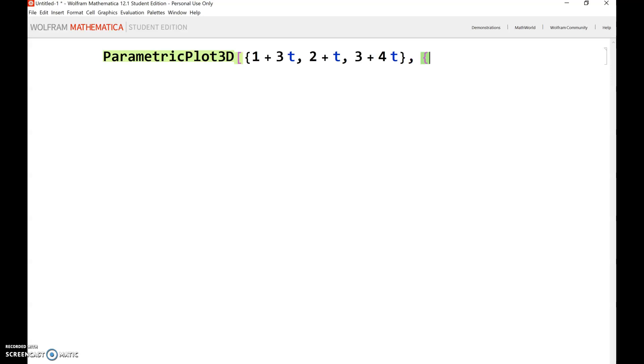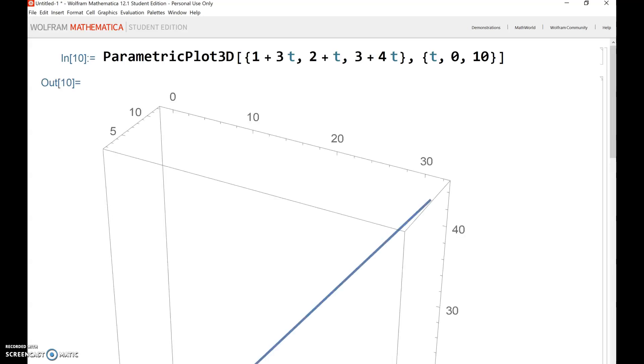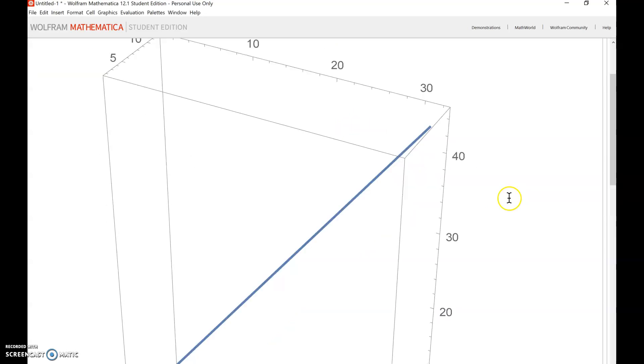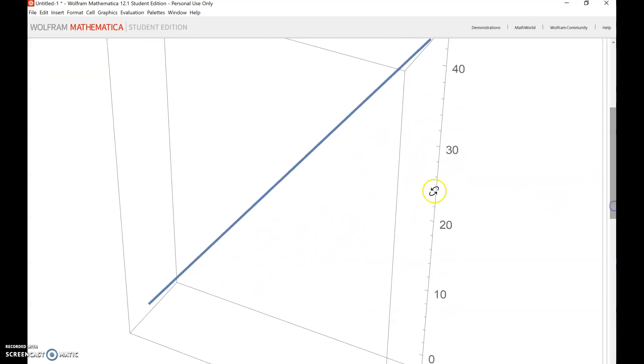Then you put a comma, and then in the next curly brackets, you have to say for what values of t. So it's kind of hard to know, but let's just say t from 0 to 10, and we'll just see how this looks, and then closing square bracket. Shift enter, if you're using a laptop, or enter on the numeric keypad. So here we have the line in three dimensions.